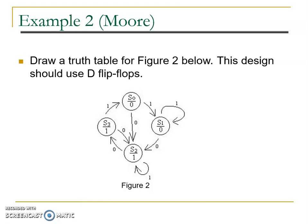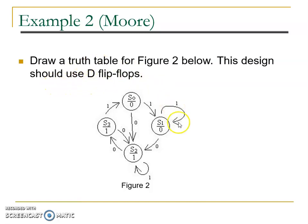Next is Example 2, still in Moore model. Draw a truth table for Figure 2 below. This design should use D flip-flop. So we have this state diagram.